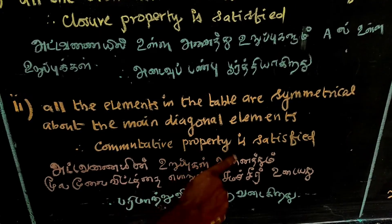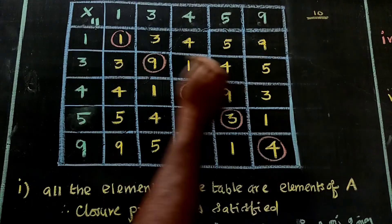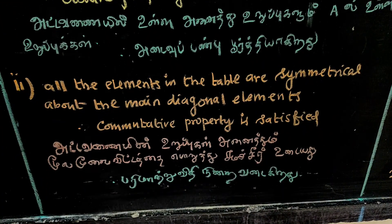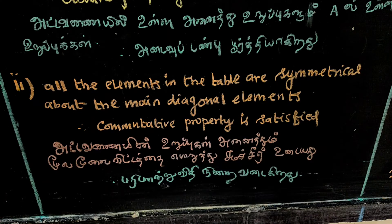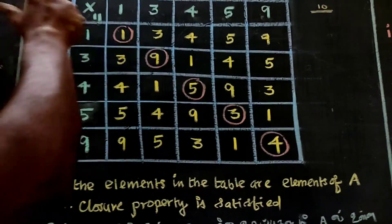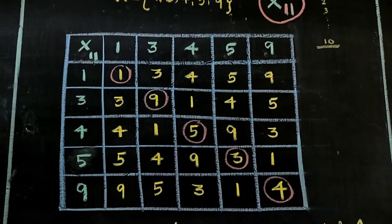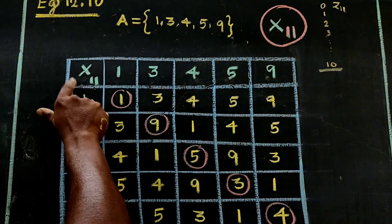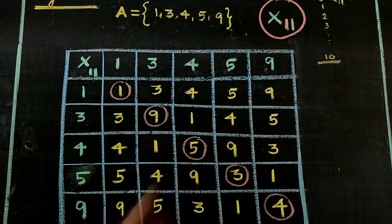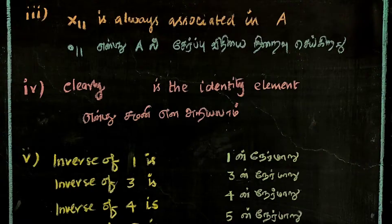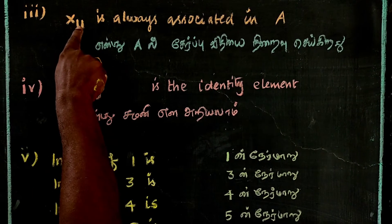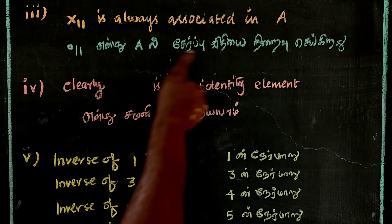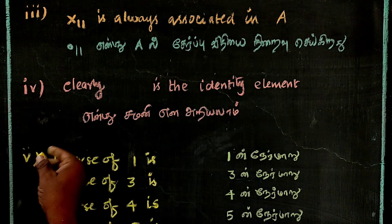If you look at the main diagonal elements, the table is symmetric about this line. Since multiplication of integers is always associative, the operation is always associative in A as well.